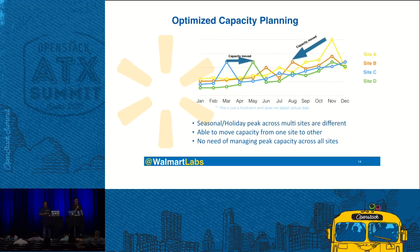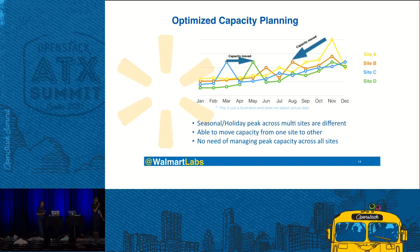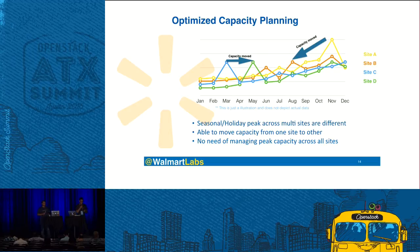This chart illustrates optimizing our capacity — not depicting actual numbers, just an example. With multiple sites running on the same cloud platform, every site has a different peak. For example, Boxing Day in Canada, Easter in the UK, or promotions somewhere else. We effectively move workload from one site to another: capacity used for the peak season of Site A can be scaled down and moved to Site C when they need it. This means we don't need to maintain peak capacity for all sites simultaneously — we balance and move capacity around across all of them.